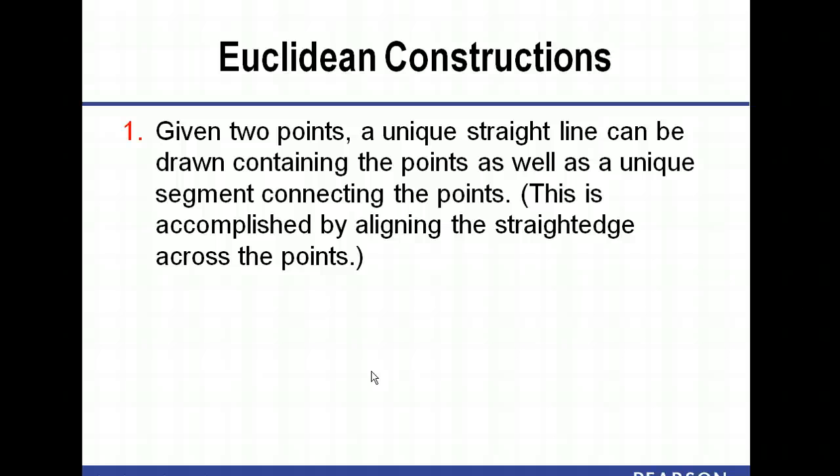Okay, so the first thing is that if we have two points we can construct a unique straight line through them, right, and this unique straight line can be drawn containing the points as well as a unique segment connecting the points. This is accomplished by you just line up a ruler and connect through the two dots, right. You can connect a line segment through them or you can connect a line. This just means connect the dots really.